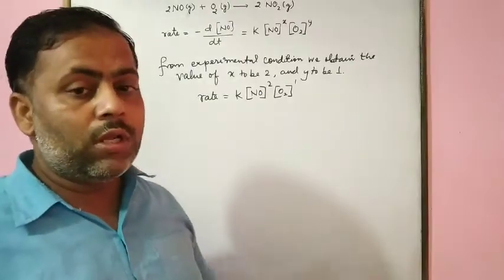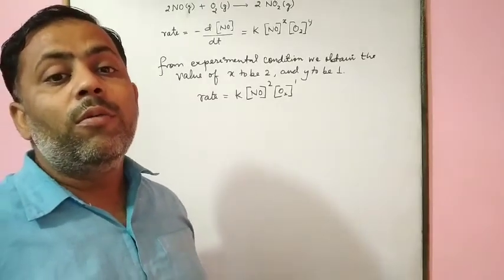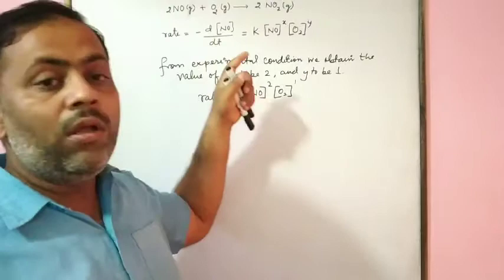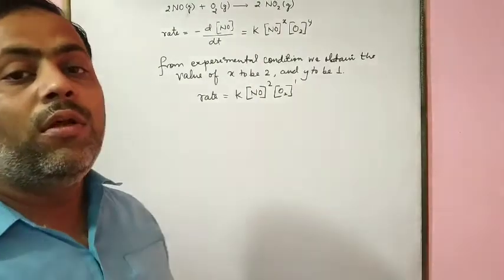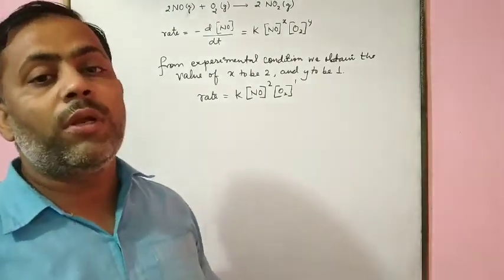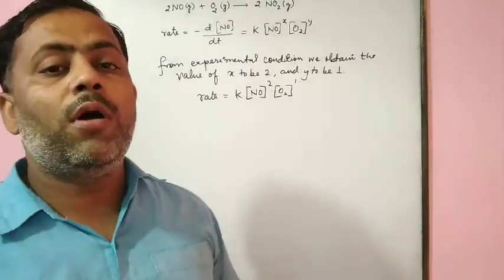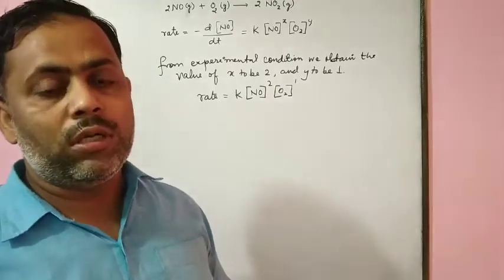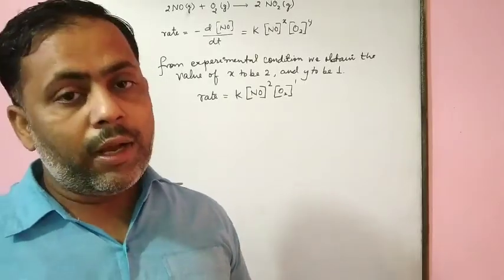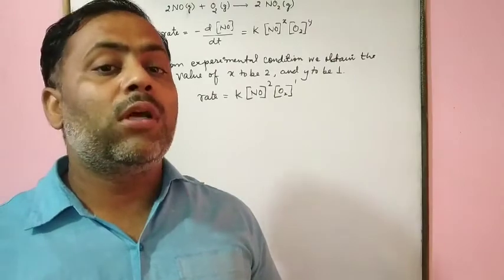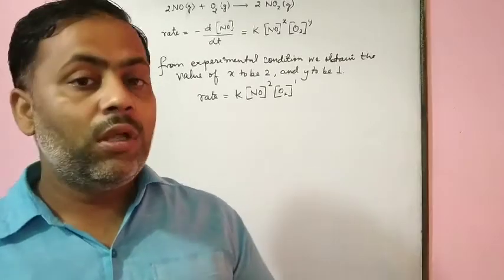So we will discuss reactions in which the raised power to the concentration of the reactant will not be equal to the stoichiometric coefficient. For example, when chloroform reacts with chlorine gas to form carbon tetrachloride and hydrochloric acid. The next example is the hydrolysis of ethyl acetate — in that reaction, the raised powers X and Y will not be equal to the stoichiometric coefficients. Let us discuss them.